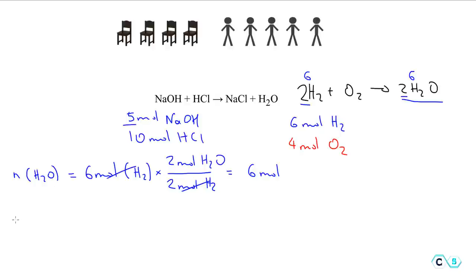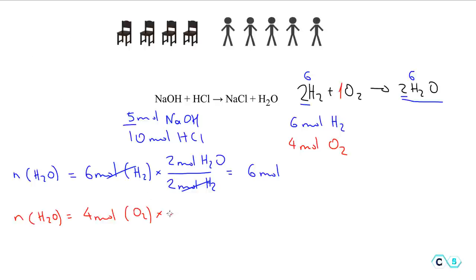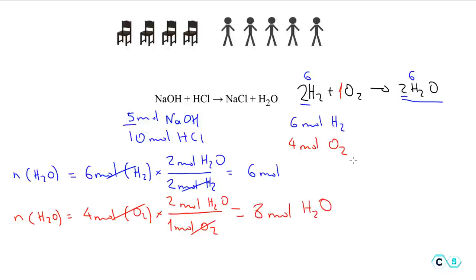Now checking how much water we get from oxygen — ignoring hydrogen for the moment — the moles of water from oxygen equals 4 moles of O₂ multiplied by the mole ratio: every 1 mole of O₂ gives 2 moles of H₂O. Canceling units, 4 moles of oxygen gives us 8 moles of water.